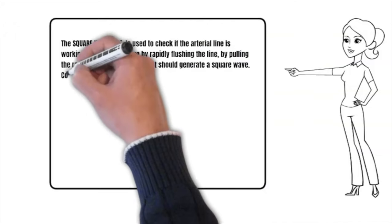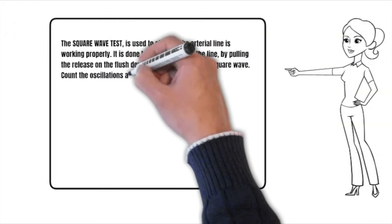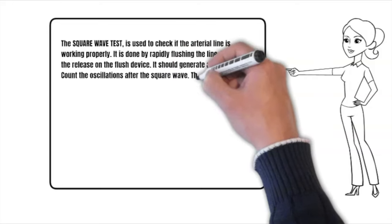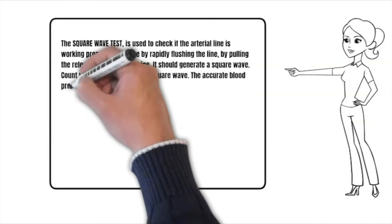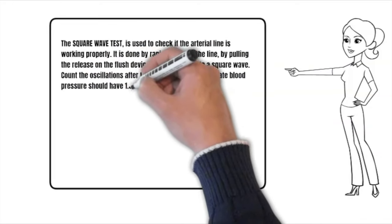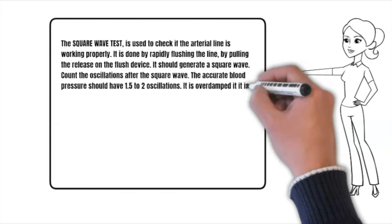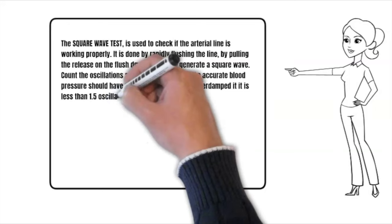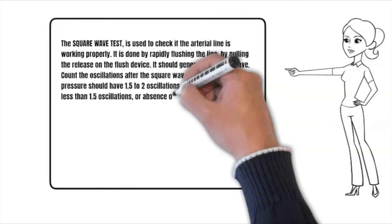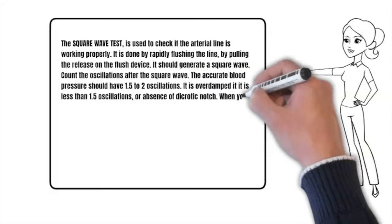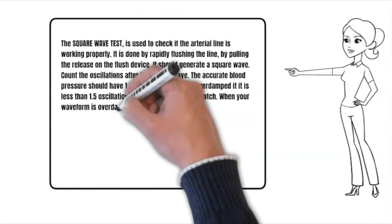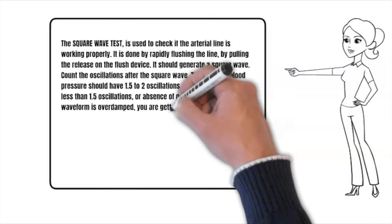It should generate a square wave. Count the oscillations after the square wave. The accurate blood pressure should have 1.5 to 2 oscillations. It is overdamped if it's less than 1.5 oscillations or absence of dicrotic notch. When your waveform is overdamped, you are getting falsely low blood pressure.